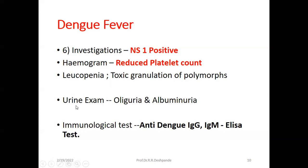In urine examination, there will be oliguria — less urine produced in 24 hours. There will also be albuminuria — albumin present in the urine. Normally albumin should not be present, but it is found in Dengue fever. For immunological tests: anti-dengue IgG test, anti-dengue IgM test — that is the ELISA test.